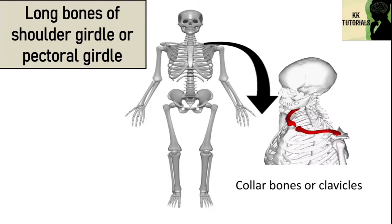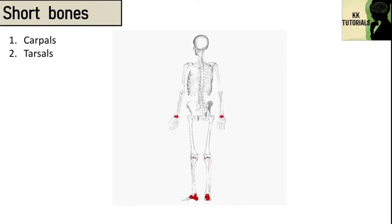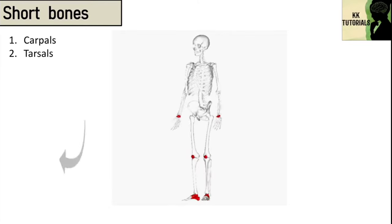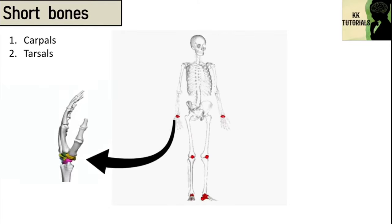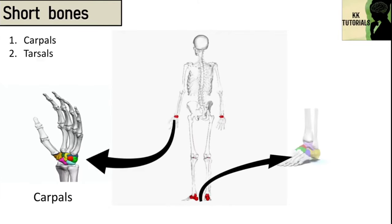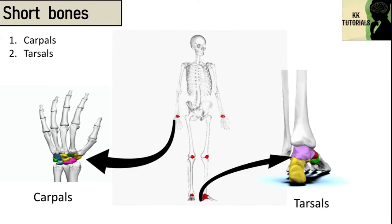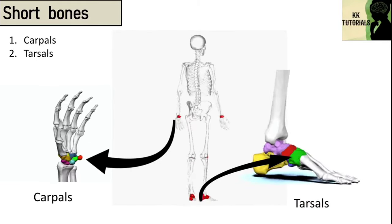Short bones include two types: carpals and tarsals. Carpals are present in the wrist, whereas tarsals are present in the ankle. These short bones provide stability and some movement.